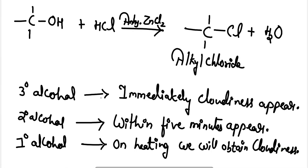Tertiary alcohols readily react with anhydrous ZnCl2 to form cloudiness immediately, while secondary alcohol takes more than one to two minutes to form cloudiness, and primary alcohol never reacts at room temperature — it must be heated. By using this method we can differentiate tertiary, secondary, and primary alcohols. This is called the Lucas test because it uses Lucas reagent, which is anhydrous ZnCl2 in HCl.